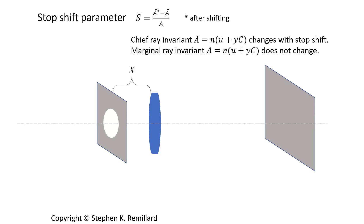To quantify the effect of a stop shift on aberrations, we need to define the stop shift parameter — S with a bar over it — which is the difference in chief ray invariant before and after shifting, divided by the marginal ray invariant. A and A-bar are refractive invariants: they pertain to the chief ray and marginal ray and don't change on either side of a refracting surface. Quantities with a bar above them pertain to the chief ray: A-bar, U-bar, Y-bar.